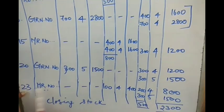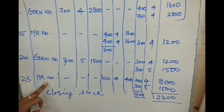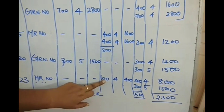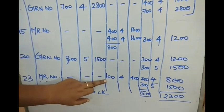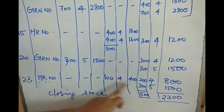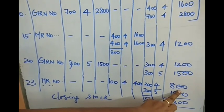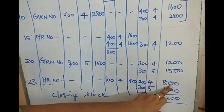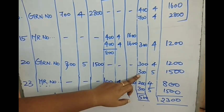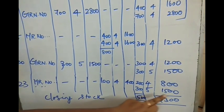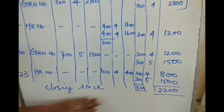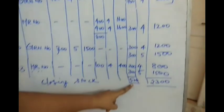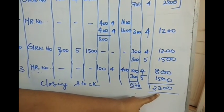The last transaction is on January 23rd — an issue of 100 units. Using FIFO, I take 100 units from the earliest batch of 300 units at ₹4 per unit. The remaining balance from that batch is 200 units at ₹4 per unit, ₹800. The previous purchase of 300 units at ₹5 per unit, ₹1500, is also carried forward. So the closing stock as on January 31st using the FIFO method amounts to 500 units with a total value of ₹2300.